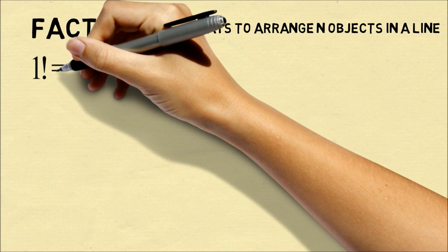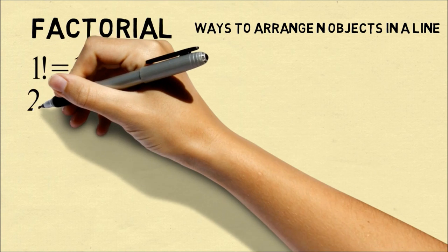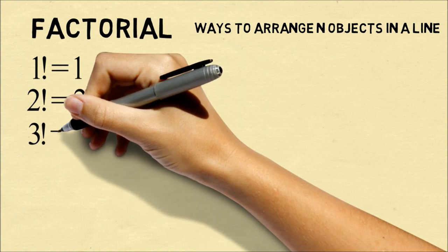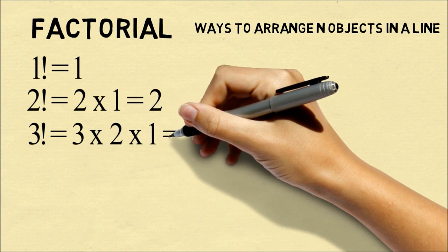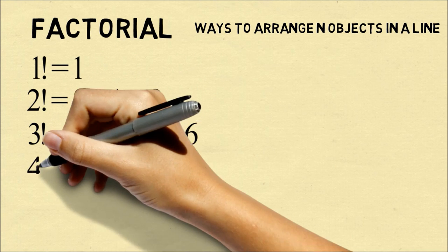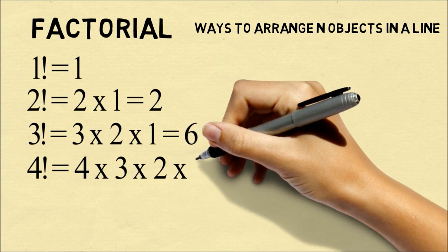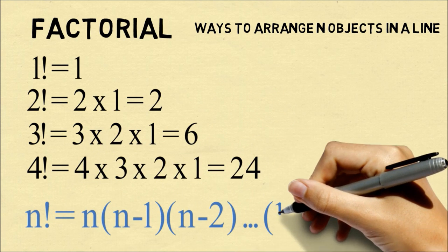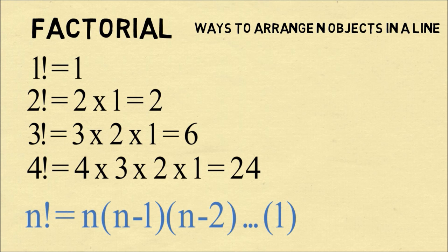It's often written with an exclamation point. So 1 factorial is 1, 2 factorial is 2 times 1, which is 2, 3 factorial is 3 times 2 times 1, which is 6, 4 factorial is 4 times 3 times 2 times 1, which is equal to 24. And in general, n factorial is equal to the product of all the whole numbers up to n.